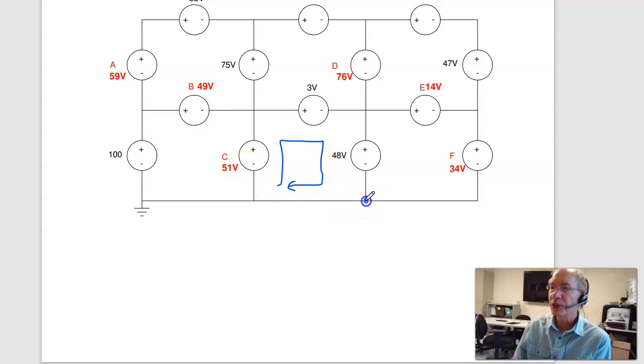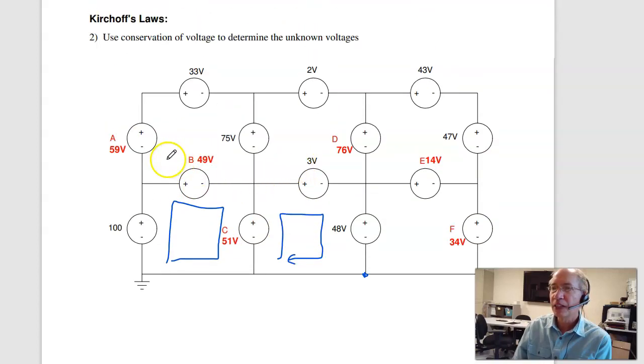You can also do it this way. If I start from this corner and go up, I get 51. I've got to get the same answer going left. Once I know C, I can solve for B. So minus 100 plus B plus C, and back where I started, equals zero. B is 49. Once I know B, I can solve for A. Minus A plus 33 plus 75 minus B equals zero. Back where I started.